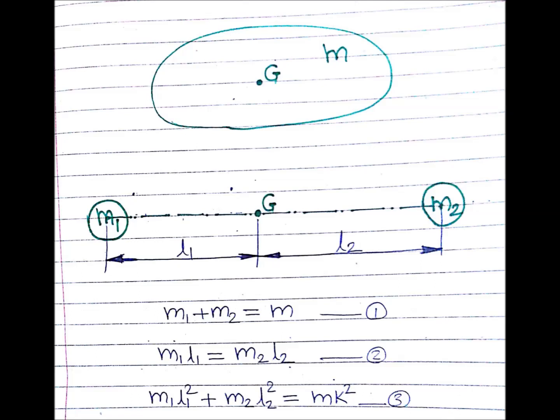Certain conditions must be satisfied for two masses to behave the same as the original body. Condition 1: M1 plus M2 equals M — the sum of the two masses equals the mass of the original body. Condition 2: M1·L1 equals M2·L2 — so that the CG falls at the same location as that of the original rigid body.